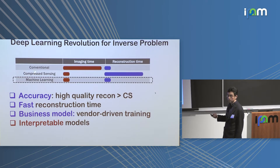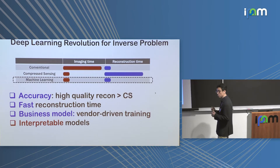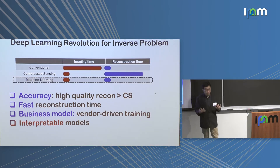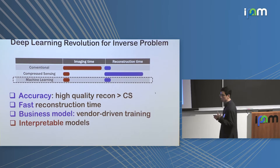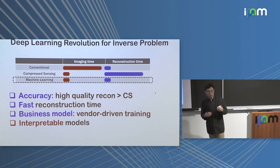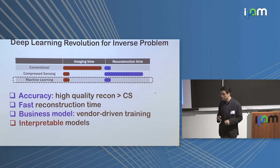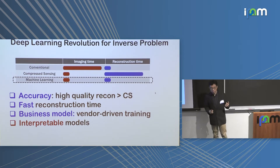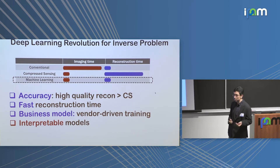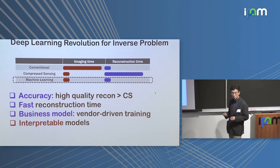Machine learning takes the best of both worlds. The magic comes from training — training takes a long time, but this is not a downside because it is ideally suitable for a business model: vendors train the neural network using their large datasets, sell the trained model to users, and users enjoy real-time reconstruction. In fact, there are already at least two commercially available deep learning software packages for CT reconstruction on the market, from GE and Canon.